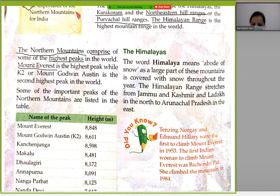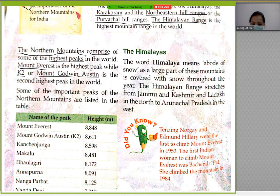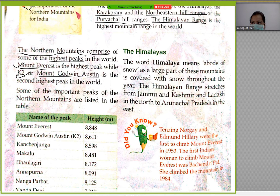Mount Everest is the highest peak, while K2, also known as Mount Godwin-Austen, is the second highest peak in the world. So Mount Everest is the first highest peak and K2, whose other name is Mount Godwin-Austen, is the second highest peak in the world.